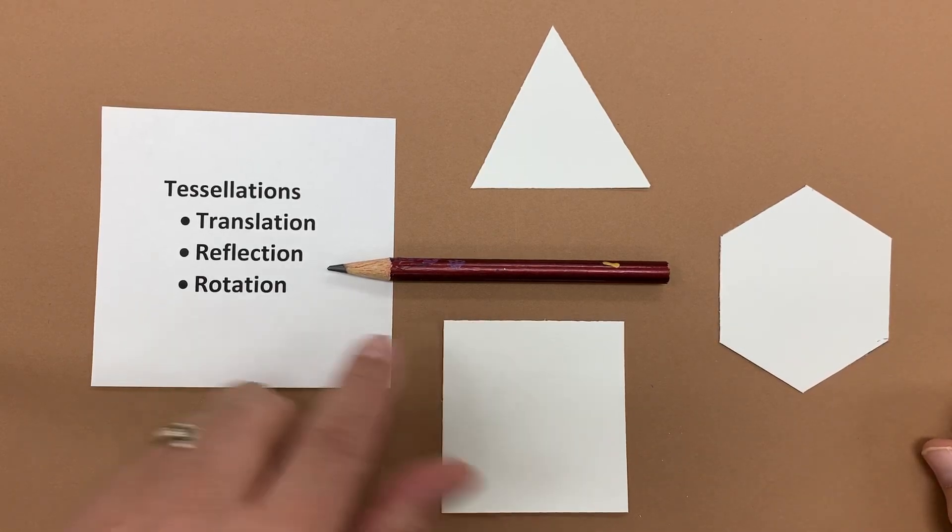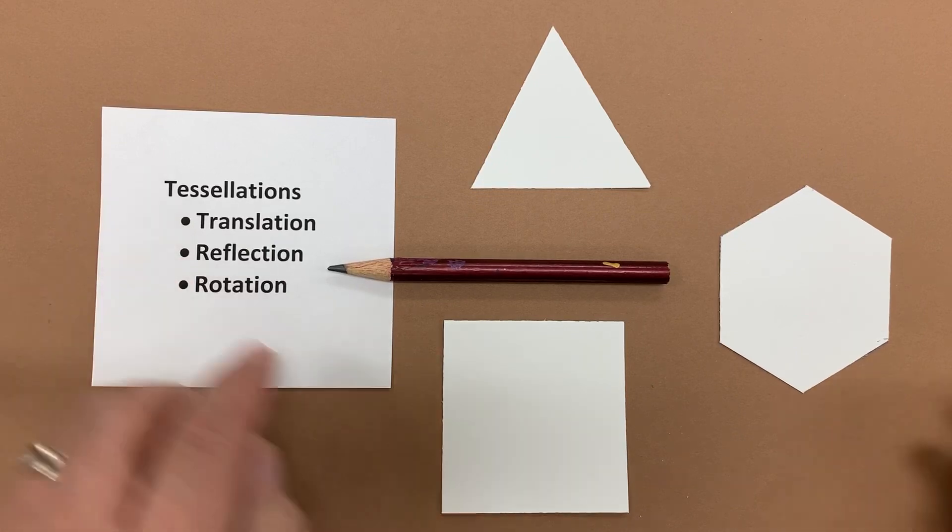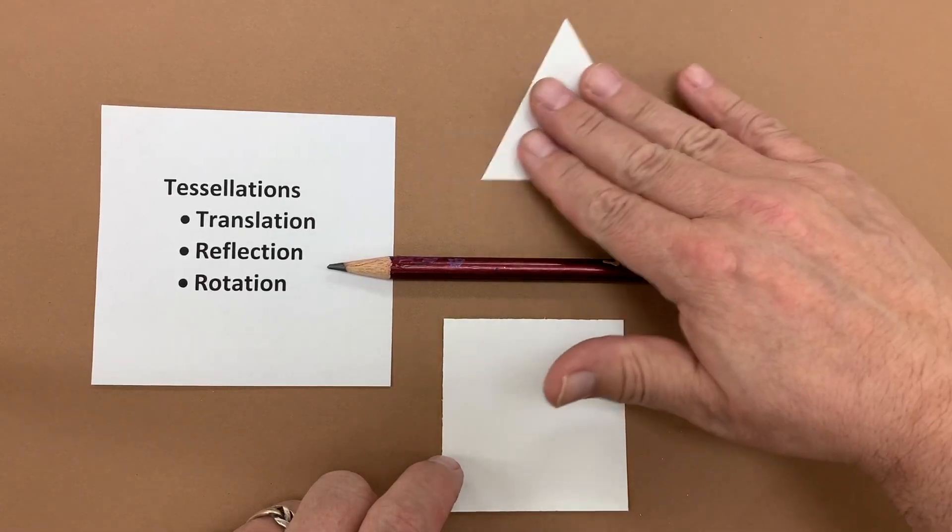This is the second technique of tessellations. We're going to do a tessellation by reflection. We know that we can tessellate with triangles, hexagons, and squares, but we're going to start with the square.